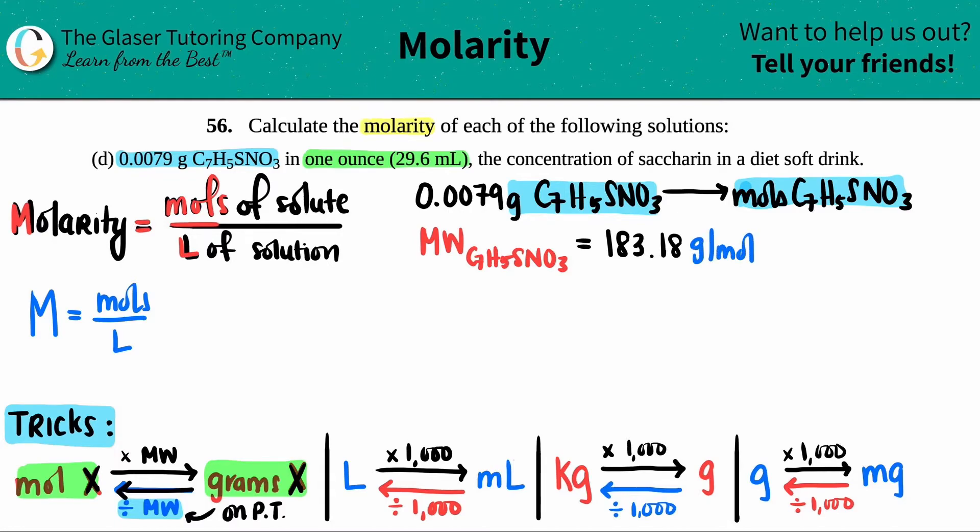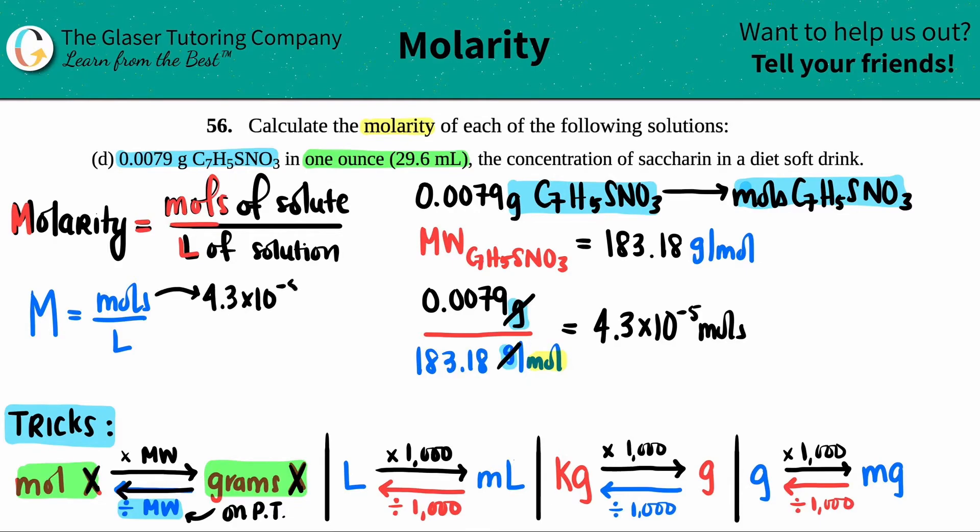All we have to do is take our grams and divide by the molecular weight to get the moles. Taking 0.0079 grams and dividing by the molar mass, 183.18 grams per mole. You see how the grams cancel, leaving only moles. 0.0079 divided by 183.18, two sig figs here, so 4.3 times 10 to the negative fifth moles.